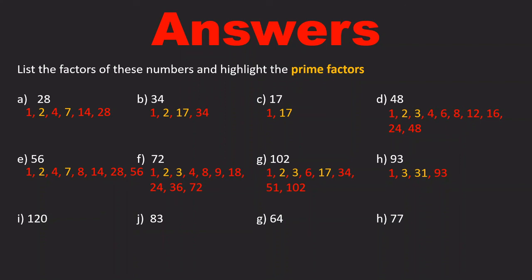Question I, 120 has got all of these factors — and notice that all of these numbers are some multiple of either 2, 3, or 5. Question J, 83 — it's a prime number, so it's only got factors 1 and 83. Question K, 64 has got factors 1, 2, 4, 8, 16, 32, and 64. You might have written 8 twice because 64 divided by 8 is 8, however we only need to write it down once as a factor. And finally, 77 has got factors 1, 7, 11, and 77 — not many factors in this case, because both 7 and 11 are prime numbers. Notice that 77 is equal to 7 times 11 — it's a product of these two prime factors.